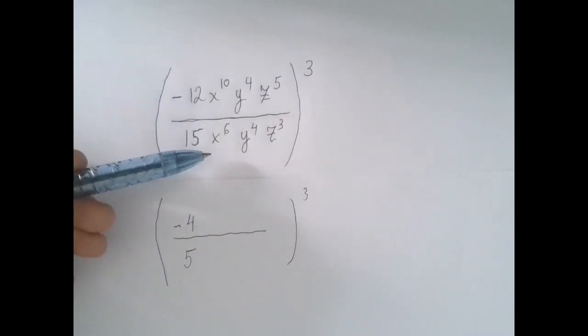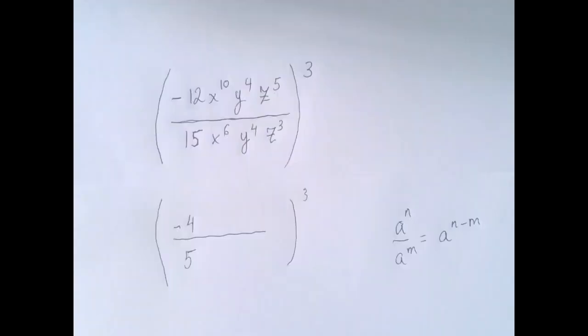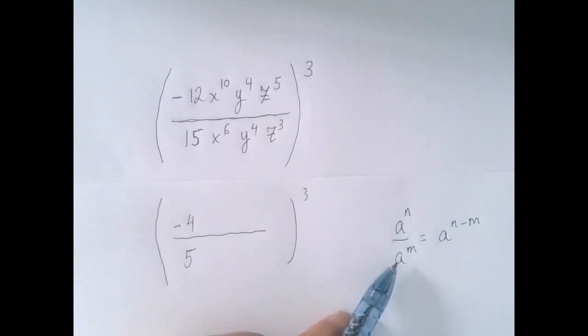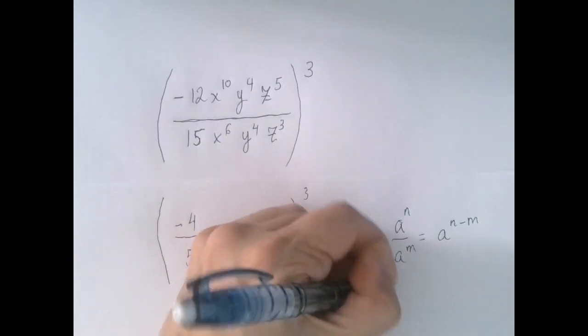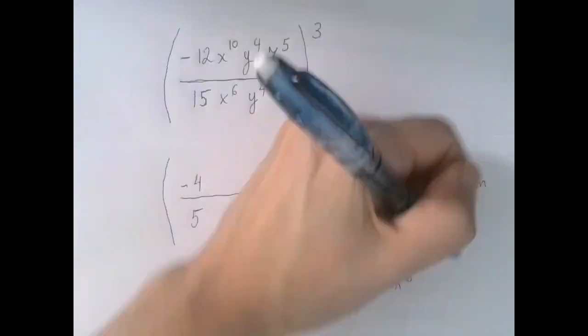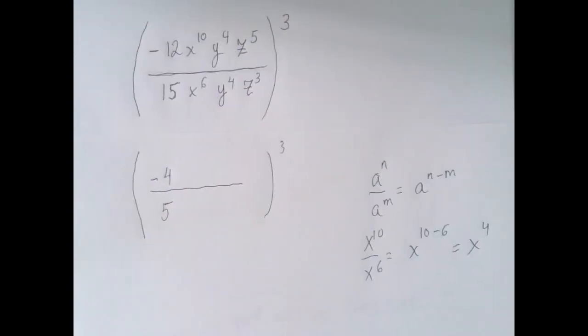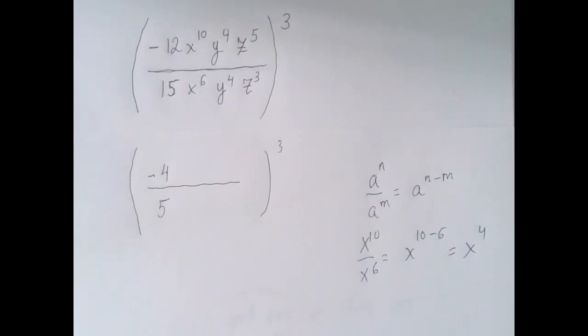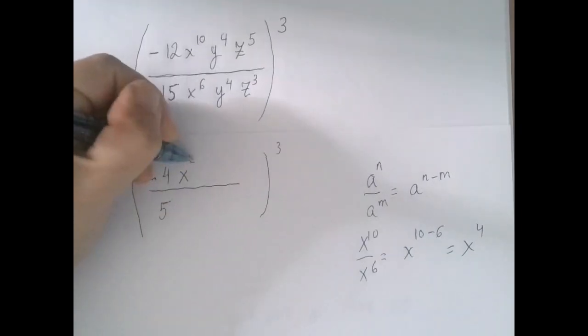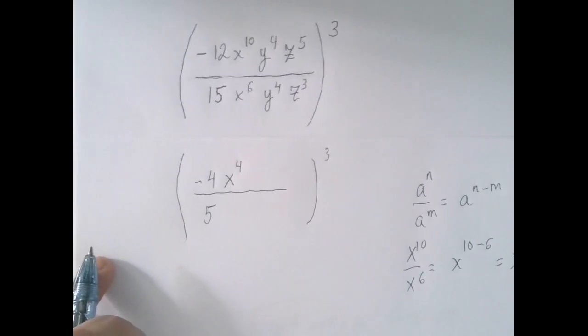Now between x to the 10 and x to the 6, we have this rule of exponents, so that means x to the 10 over x to the 6 is the same as x to the 10 minus 6, which is x to the 4. So that means in the numerator, we're going to have four of them left.